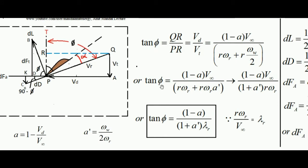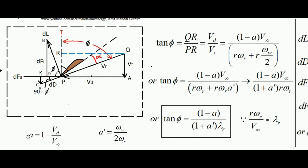VD — from the previous lecture, the axial induction factor A is defined as A = 1 − VD/V∞, where V∞ is the wind velocity at a far distance from the wind turbine and VD is the velocity of wind exactly at the wind rotor plane. So in place of VD, I have written (1 − A)·V∞. Furthermore, A' is called the angular induction factor, given by ωW upon 2·ωR, where ωW is the wake angular velocity and ωR is the rotational angular velocity of the wind turbine. In place of ωW/2, I can write ωR·A'.